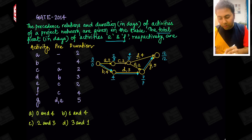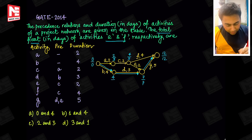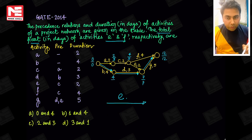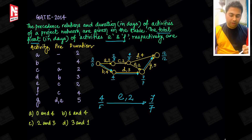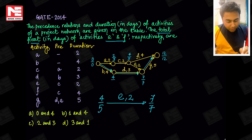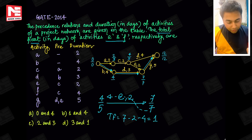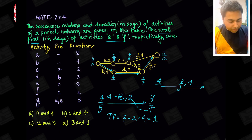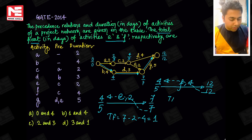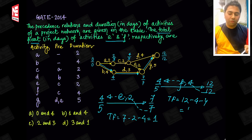For total float: 7 - 2 - 4 = 1. If I look at activity F, activity F has a duration of 4, with early/late times 4 by 5 and 12 by 12. Total float is equal to 12 - 4 - 4 = 4. So the answers will be 1 and 4.